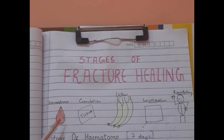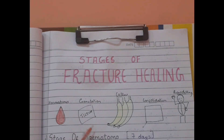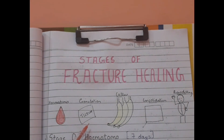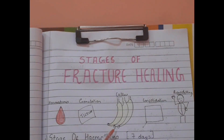First we have the stage of hematoma — hematoma means blood. Next we have the stage of granulation tissue: since there is blood, you are going to clean it out by making use of a tissue — granulation tissue. Thirdly, we have the stage of callus formation.